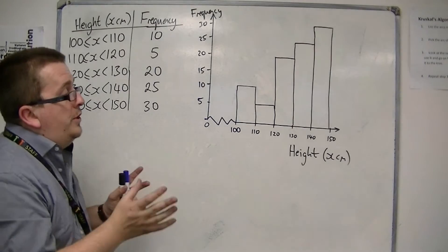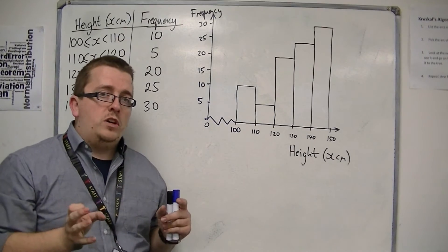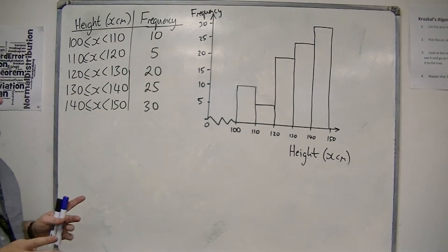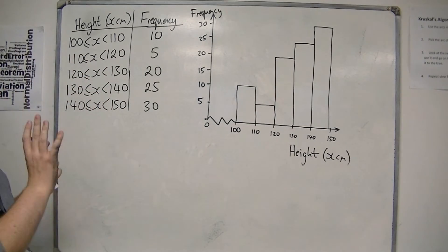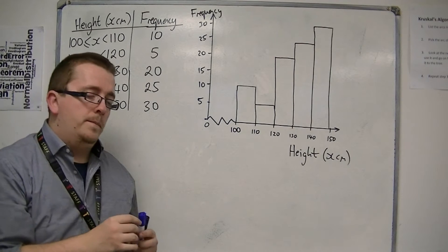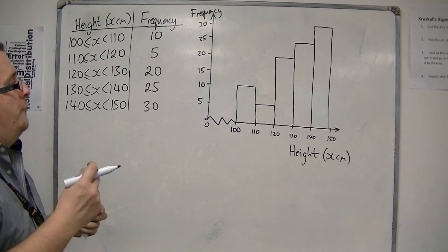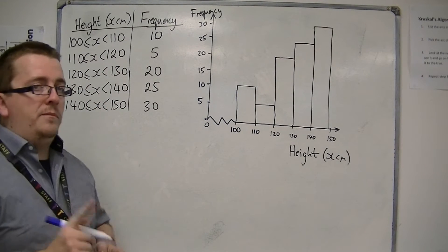We could use a dual bar chart to do that, but preferably we would use a frequency polygon. The frequency polygon looks something like this.